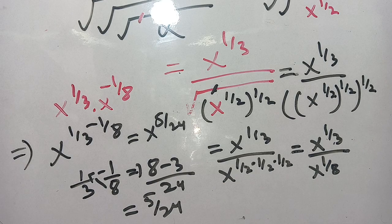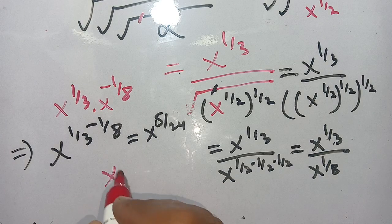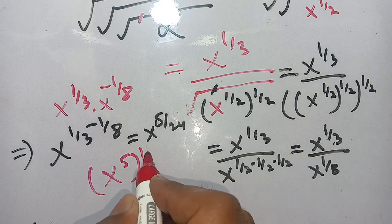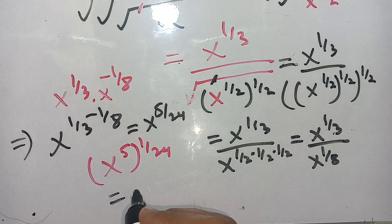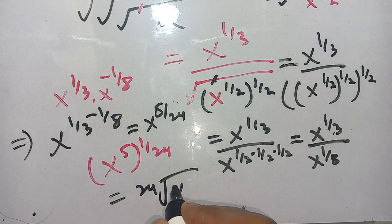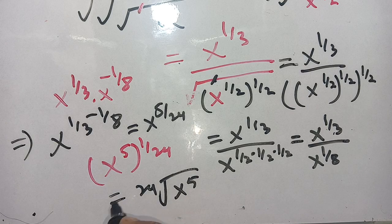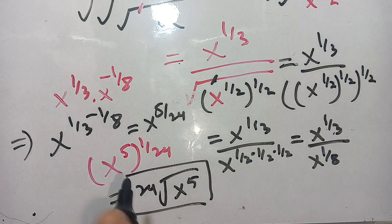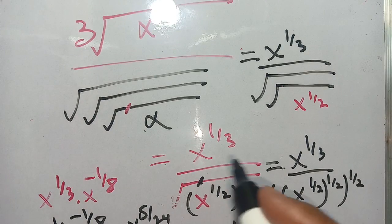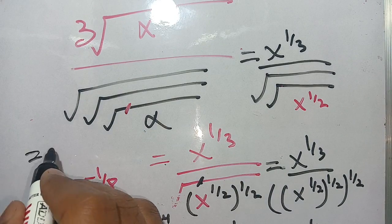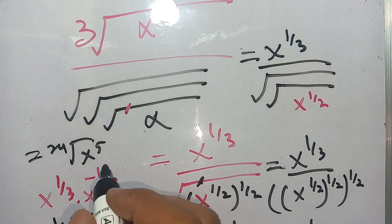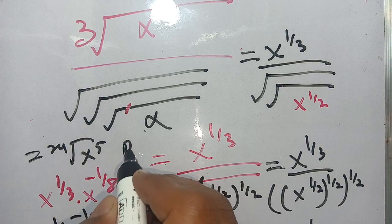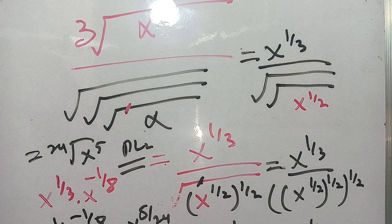We write this as x power 5, bracket power 1 divided by 24, which can be written as the 24th root of x power 5. Thus the simplest form of this problem is the 24th root of x power 5. If you're new here, make sure to subscribe to the channel for more informative videos. See you in the next video, bye!